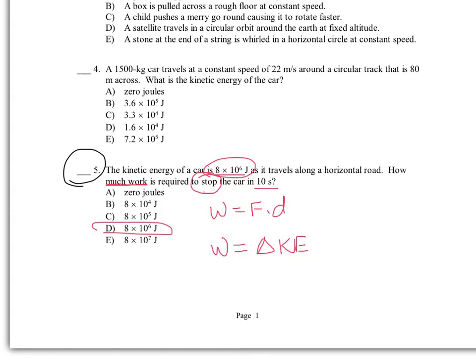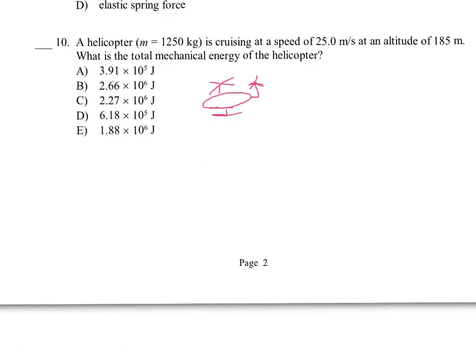Okay, so in this problem we have a helicopter. It's moving along at 25 meters per second at an altitude of 185 meters. And it says what is the total mechanical energy of the helicopter. So basically how much energy does it have.